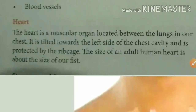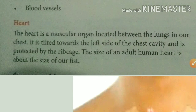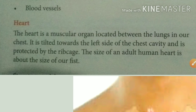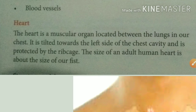The heart is a muscular organ located between the lungs in our chest. It is tilted towards the left side of the chest cavity and is protected by the rib cage. The rib cage is a new term, which will be shown in the diagram.